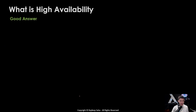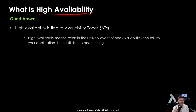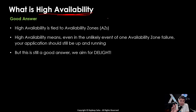Now let's take a look at a good answer for what is high availability. The term itself is giving you the hint — look at the word 'availability.' High availability is tied to availability zones. So high availability means that even in the unlikely event of one availability zone failure, your application should still be up and running. This is a good answer, but remember we don't aim for good — we aim for delight.